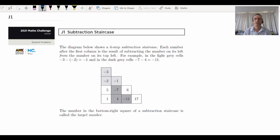Hello and welcome to the first problem in the 2021 Junior Math Challenge, which is called the subtraction staircase. At the beginning of the problem, we're introduced to a four-step subtraction staircase. I wonder why it's called four-step, perhaps because it's got four rows, maybe because it's got four columns. Let's see. It's clearly going to involve subtraction.